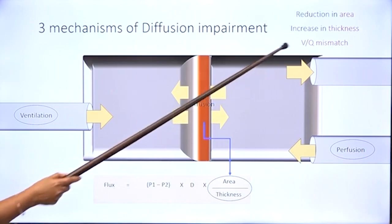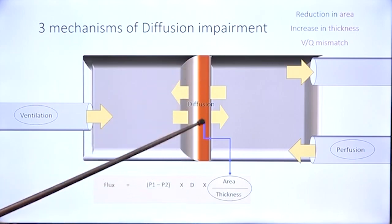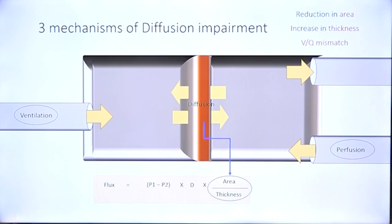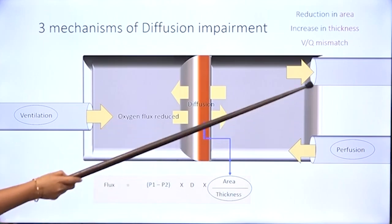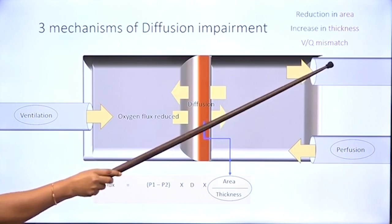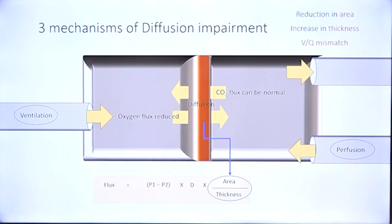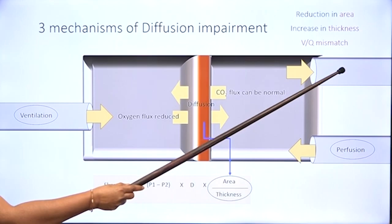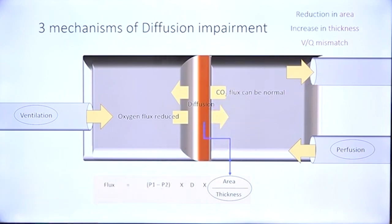VQ mismatch can be equated to diffusion impairment or reduction in surface area in fact. In diffusion impairment, oxygen flux is reduced and partial pressure of oxygen in the arterial blood will be lower — what we call arterial hypoxia. However, carbon dioxide flux can be normal and arterial concentration of carbon dioxide or PaCO2 will be normal or in fact low in diffusion impairment.